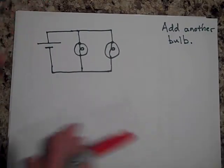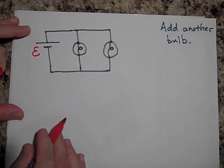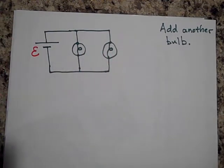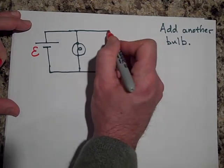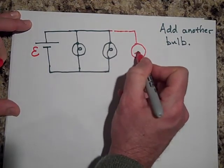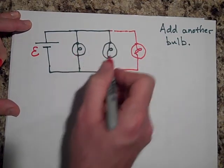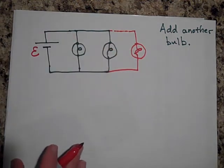Okay. Next one. I have a circuit here. This is an EMF E. And all these light bulbs are identical. And I'm going to add one more light bulb. I'm going to add one more light bulb here. When I do that, what will that do to these two bulbs? When I add the one more light bulb, what will it do to those two bulbs?